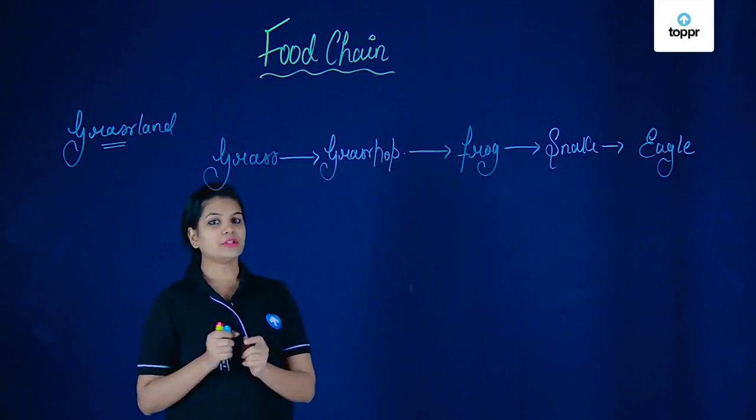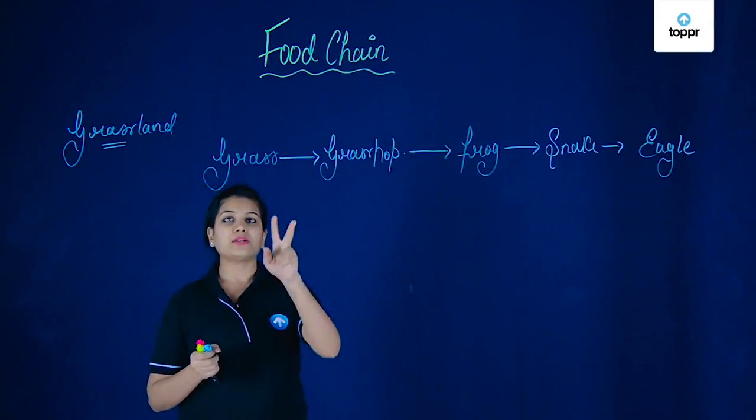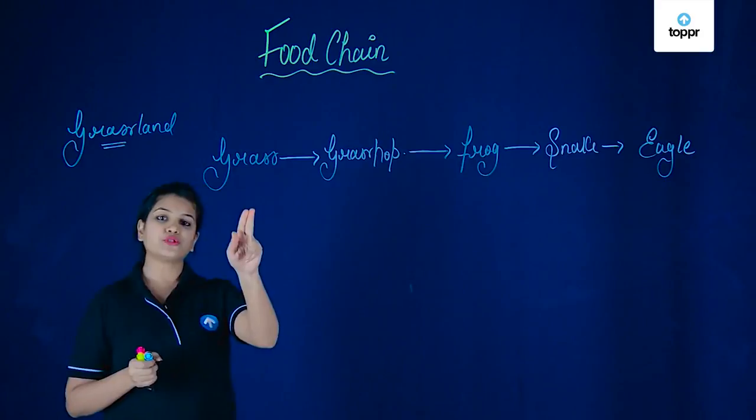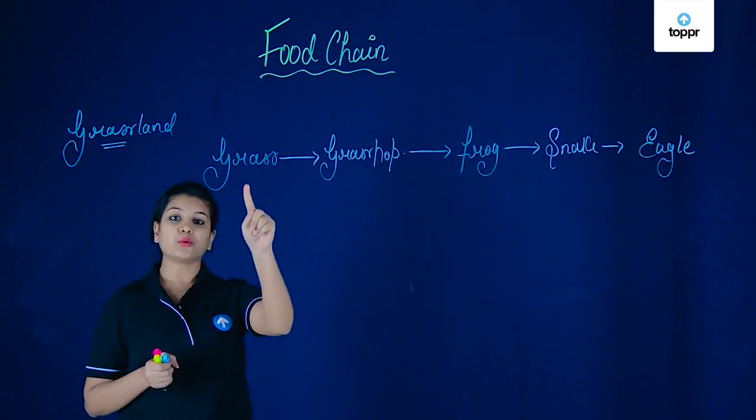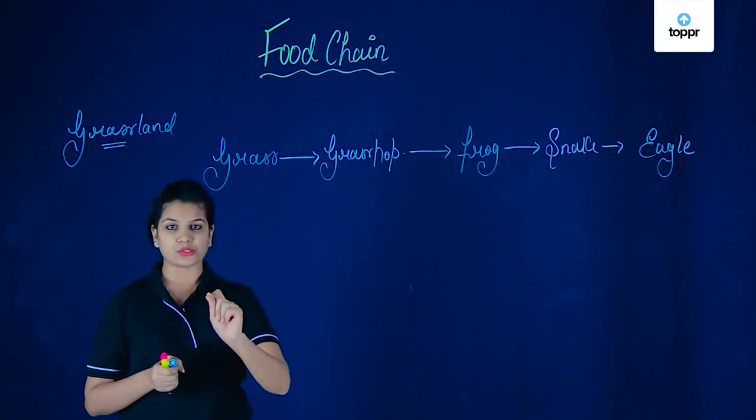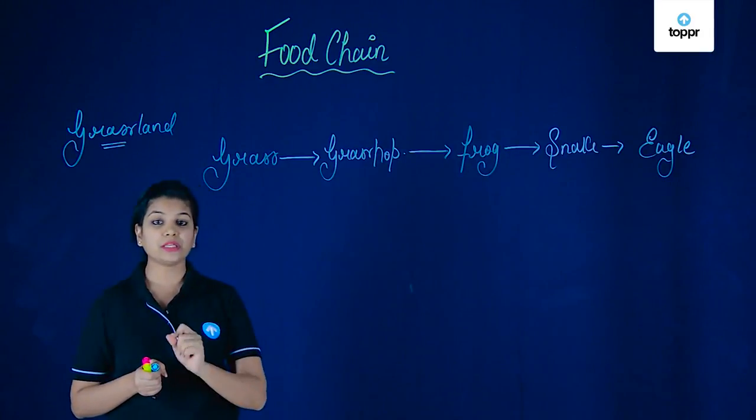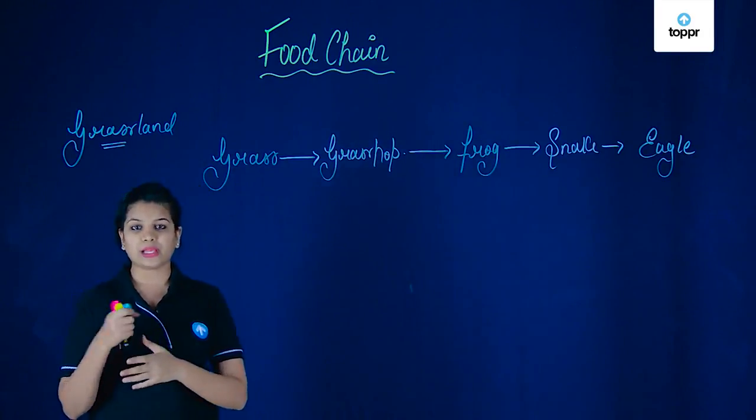One very important thing is that most of the food chains you will see start with producers, meaning with a plant.